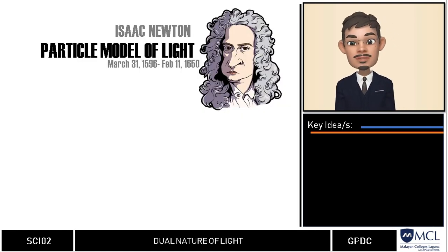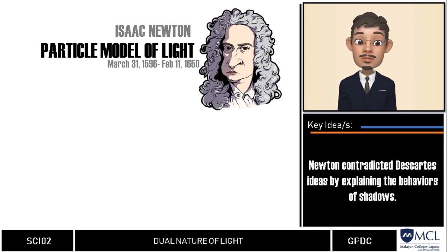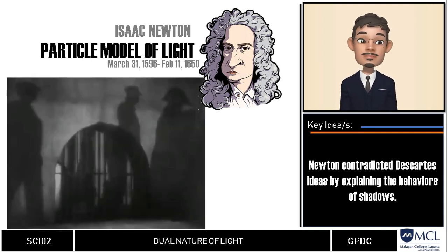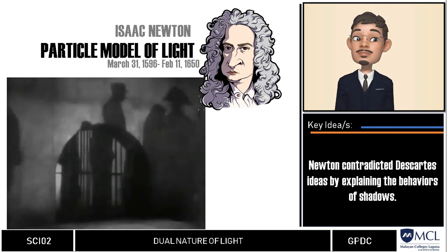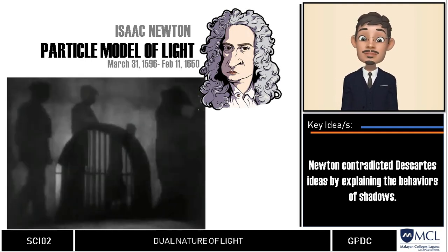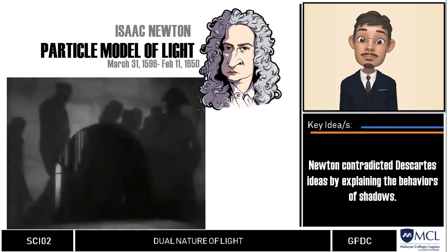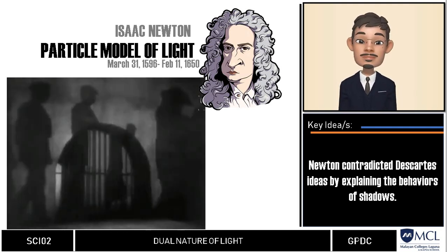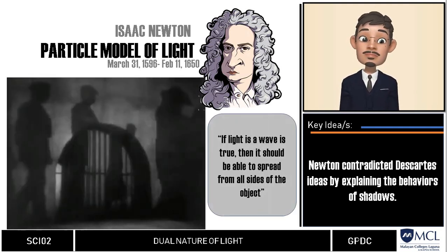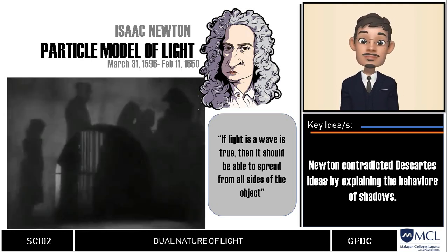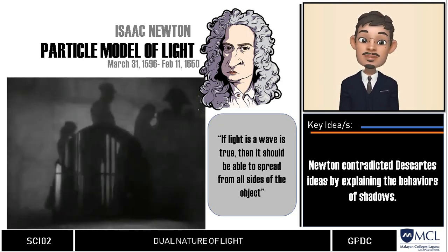Newton did not support the idea of Descartes. Newton's argument against the wave model was the formation of shadow. According to Newton, shadows are either the same size or larger than the object, so shadows must be produced by a stream of straight-moving particles blocked by an object. If light were a wave, it should be able to spread from all sides of the object, allowing the formation of a smaller shadow.